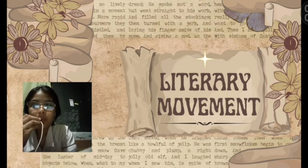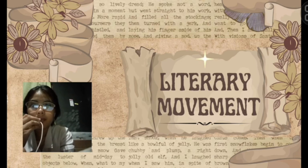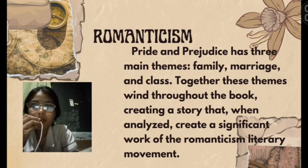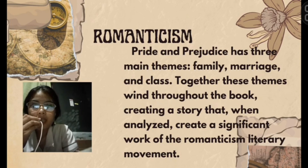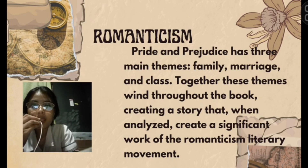Now that we are done with the plot summary, let us focus on the literary movement evident in the novel. The particular literary movement evident in Pride and Prejudice is Romanticism, because it has three main themes: family, marriage, and class. Together, these themes wind throughout the book, creating a story that when analyzed represents a significant work of the Romanticism literary movement.